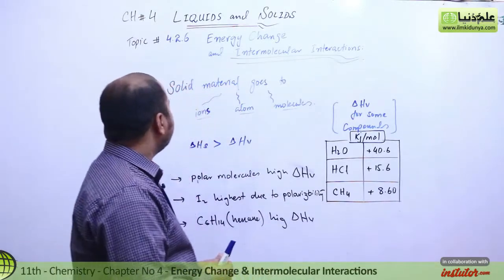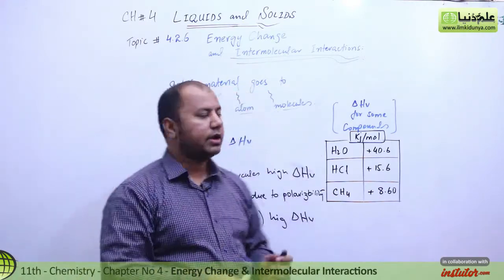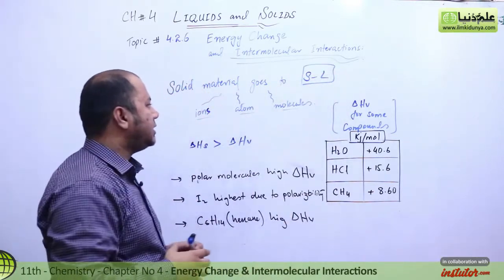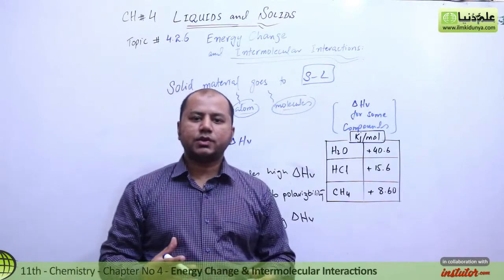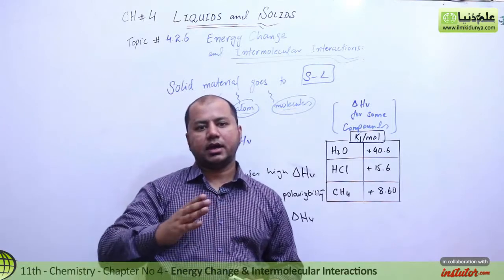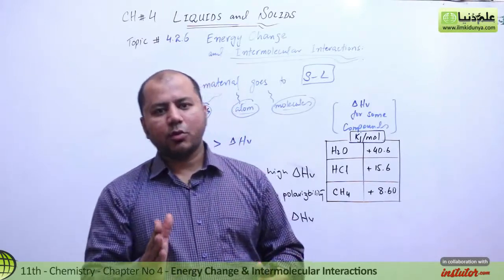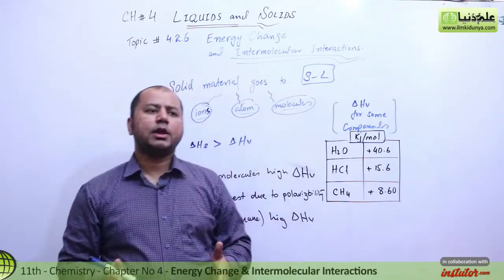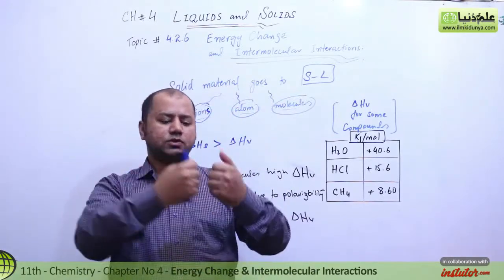When solid material is turned into a liquid, the solid turns into atoms, ions, or molecules - these species. When solid to liquid transition happens, there is something like a very small change. Why is the change small? Because when solid becomes liquid, there isn't much distance between solid and liquid phases.